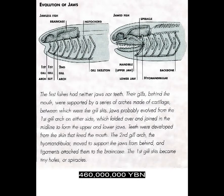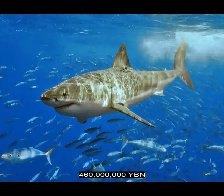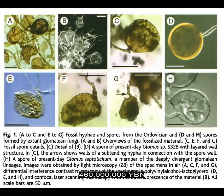Jawed vertebrates evolve—Gnathostomata. This large group includes all jawed fishes, amphibians, reptiles, mammals, and birds. The first vertebrate teeth. The jaw evolves from parts of the gill skeleton. The jawed fishes Chondrichthyes: cartilaginous fishes, ancestor of all sharks, rays, skates, and sawfishes. The earliest fungi on land—the ancestor of all terrestrial fungi: Glomeromycota, Ascomycota, and Basidiomycota. The fungi phylum Glomeromycota evolves—arbuscular mycorrhizal fungi. The end of the Ordovician mass extinction, caused by an ice age—the first of five mass extinctions in the Phanerozoic.